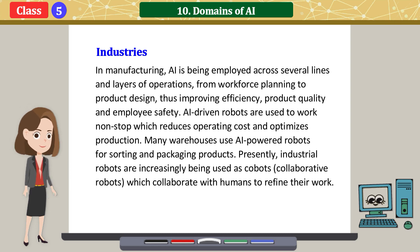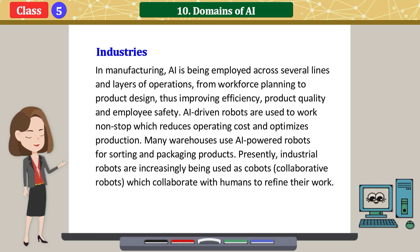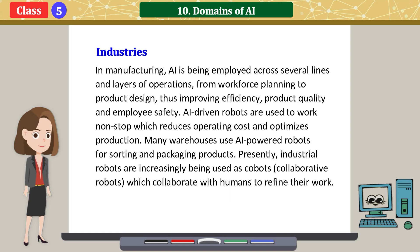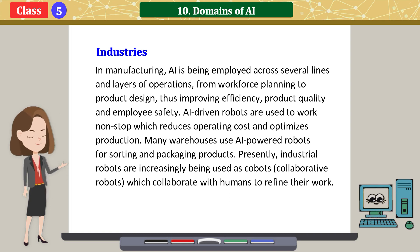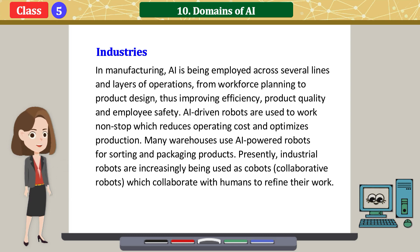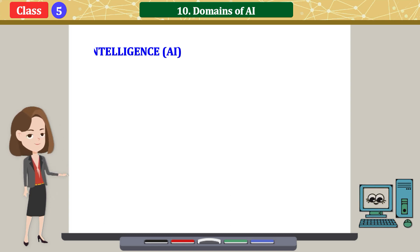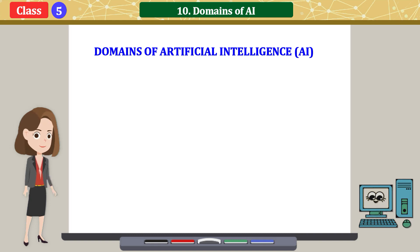In manufacturing, AI is being employed across several lines and layers of operations — from workforce planning to product design — improving efficiency, product quality, and employee safety. AI-driven robots are used to work non-stop, reducing operating costs and optimizing production. Many warehouses use AI-powered robots for sorting and packaging products. Industrial robots are increasingly being used as cobots, collaborating with humans to refine their work.